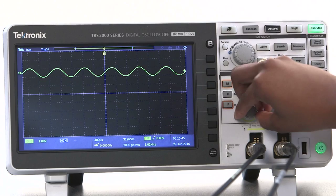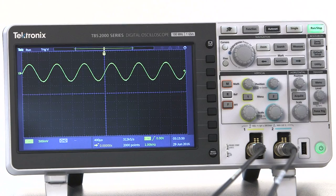The vertical scale appears to make waveforms taller or shorter, but in actuality, it determines how many volts are in each vertical division of the screen.